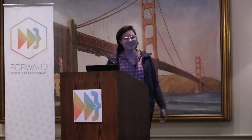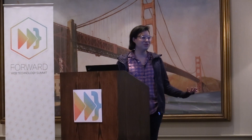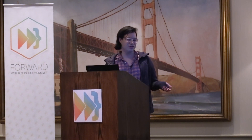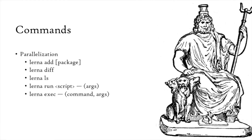The first command is `lerna add`, which adds a package you specify — for example, React. By default it'll add it to all of your packages present in your packages directory. You can configure it with scope and ignore, which I'll talk about later. `lerna bootstrap` is the alternative to npm install — you'd use it to ensure all of your dependencies are installed across your different packages, because you can run into a lot of issues with symlinks on other package installers.